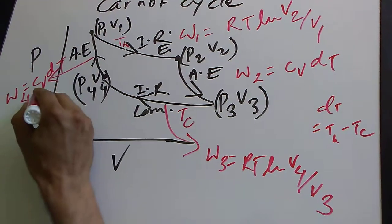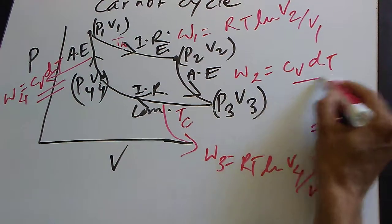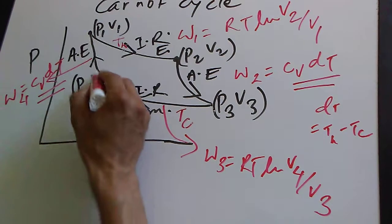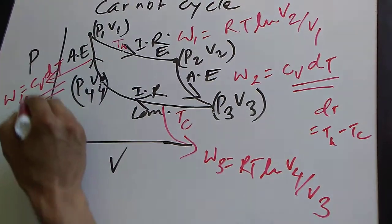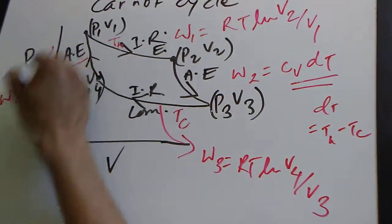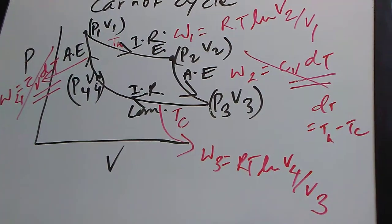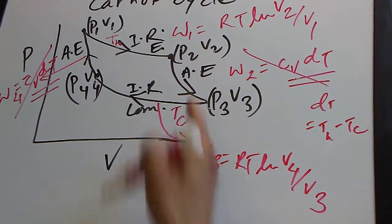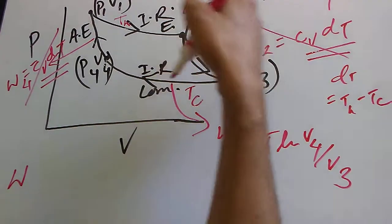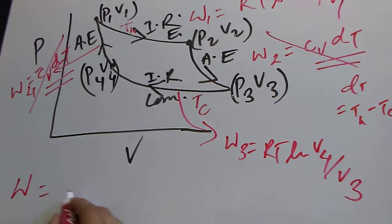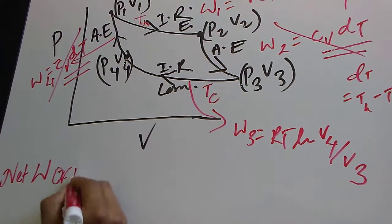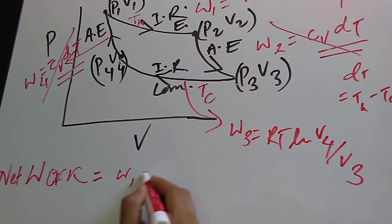W2 (adiabatic expansion) and W4 (adiabatic compression) have the same magnitude of Cv·DT but opposite signs — one is expansion (positive) and the other is compression (negative) — so they cancel each other out. Therefore, the net work done equals W1 minus W3.